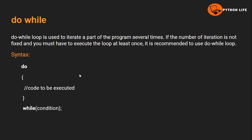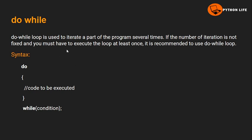Next is the do-while loop. The do-while loop is also used to execute statements several times. The key difference is that the do-while loop is an exit-controlled loop — it executes the body of the loop at least once. The body of the loop runs first, and then the condition is checked afterwards.